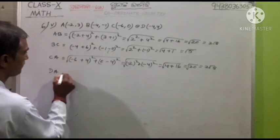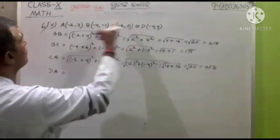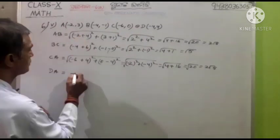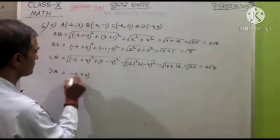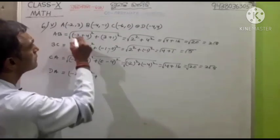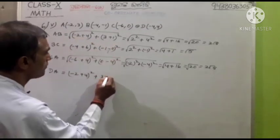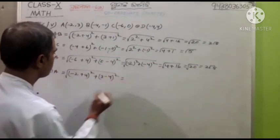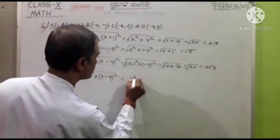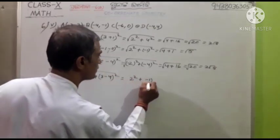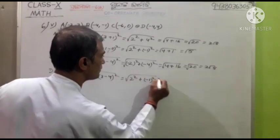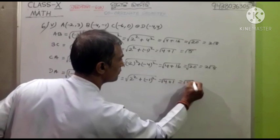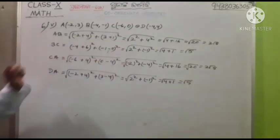D A. Minus 2 plus 4 R square plus 3 minus 4 R square. Now root over 4 is equal to 2 R square plus minus 1 R square, is equal to 4 plus 1, is equal to 5, R root 5. So what did we compile this?